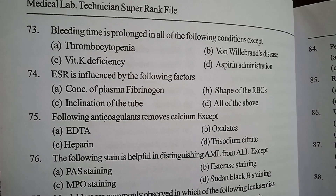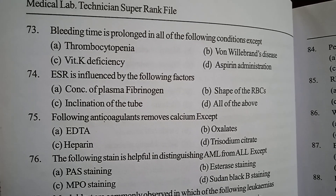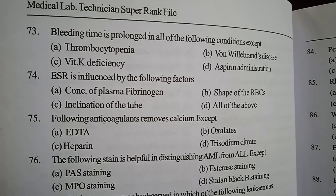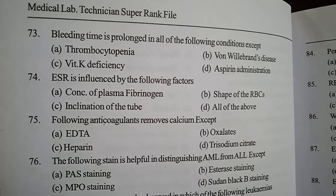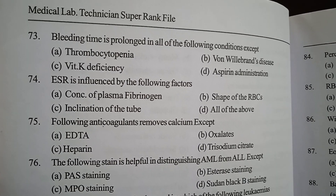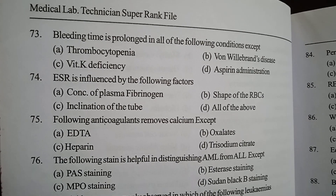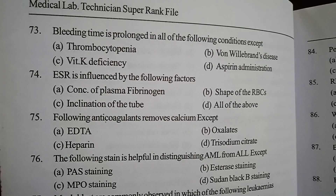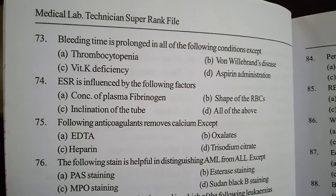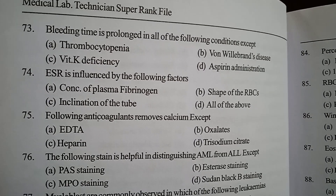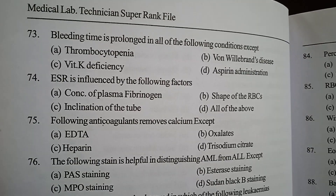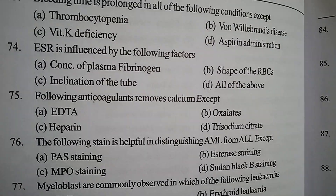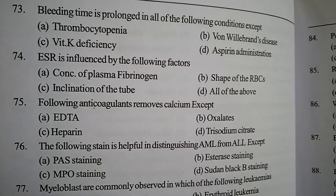Option A: thrombocytopenia. Option B: von Willebrand disease. Option C: vitamin K deficiency. Option D: aspirin administration. Correct answer: option C, vitamin K deficiency.